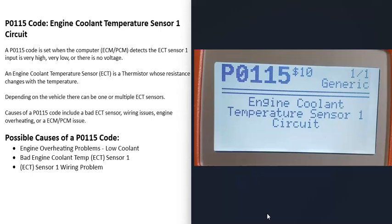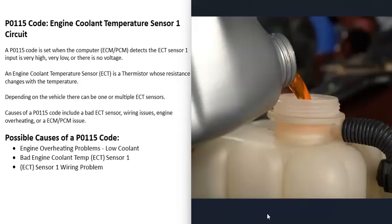One possible cause of a P0115 code is some kind of engine problem — the engine is overheating, there's low coolant, or coolant isn't circulating properly. If the engine is overheating or there's no coolant circulating, that can throw off the engine coolant temperature sensor and cause it to act erratically and throw codes. Although P0115 points more towards a circuit issue, keep in mind that a severe overheating problem can also trigger these codes.